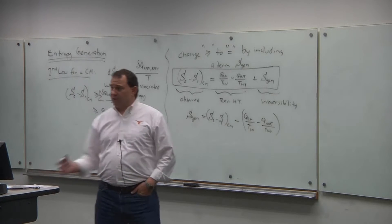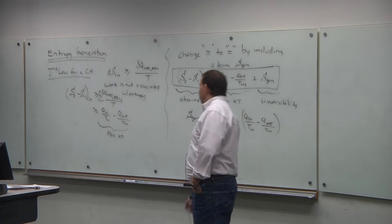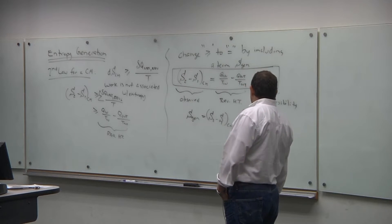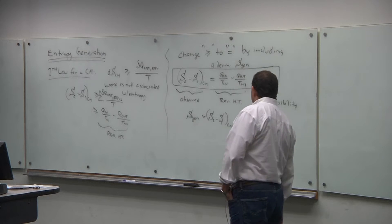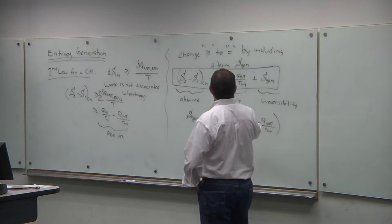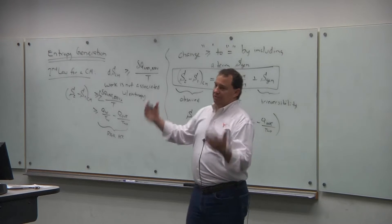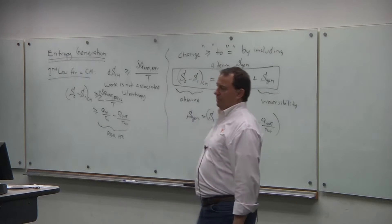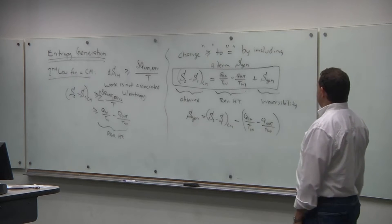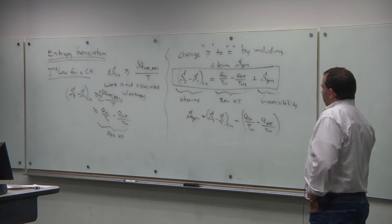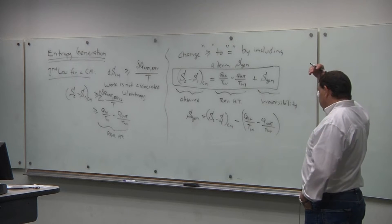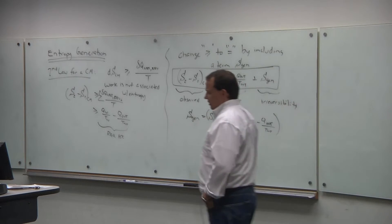We know entropy is greater than zero for an isolated system and a closed system, depending on which way the heat transfer goes. We can make that inequality an equality by using the irreversibility term — this S_gen term. We don't know what it is, so we call it the generated entropy, which must be the difference. And there are times when you want to calculate the generated entropy. That's a recap of what we've done before.